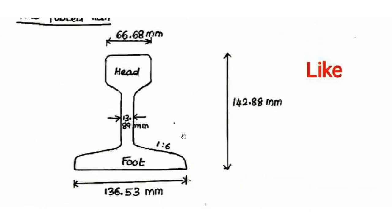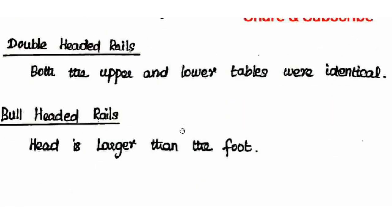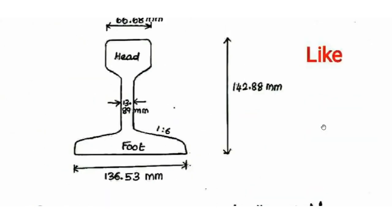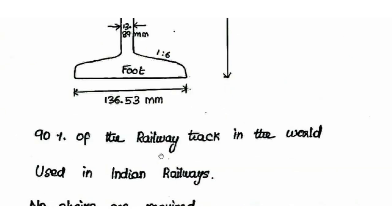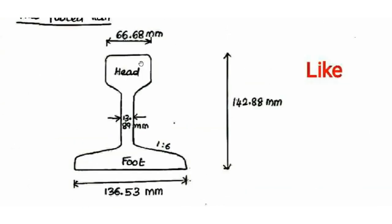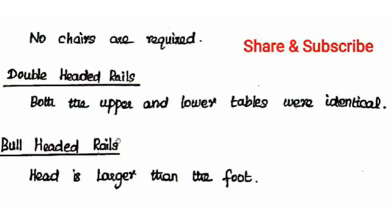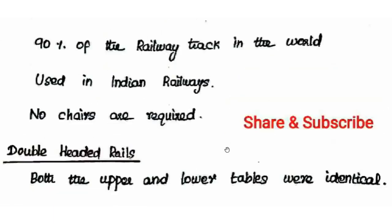For sleepers with flat footed rails, there are no chairs. But for double headed and bull headed rails, chairs are fixed to the sleeper. In double headed rails, both upper and lower tables are identical in shape. The head is larger compared to the foot. This is the shape of double-headed and bull-headed rails — chairs are used to fix them to sleepers, but flat footed rails require no chairs.